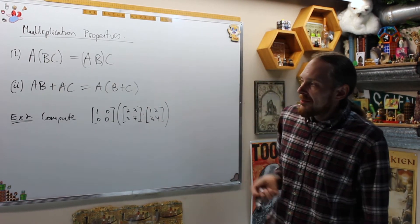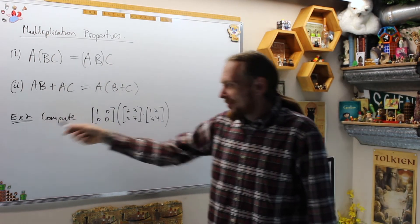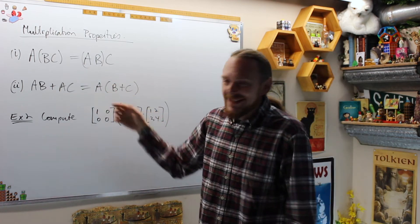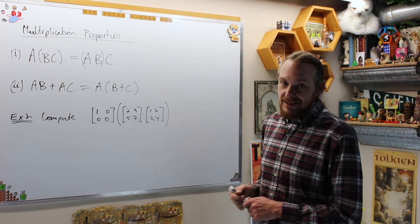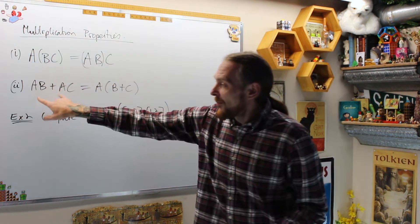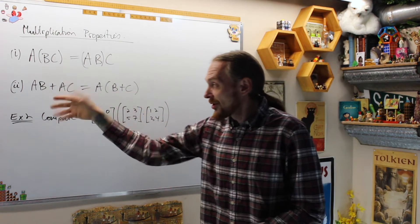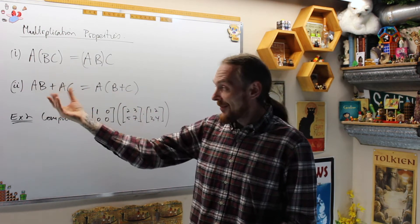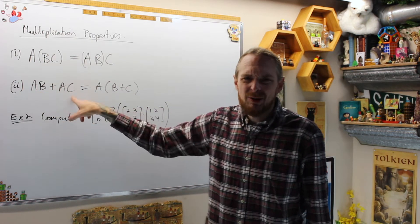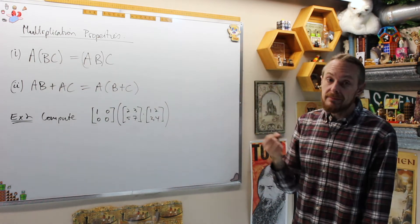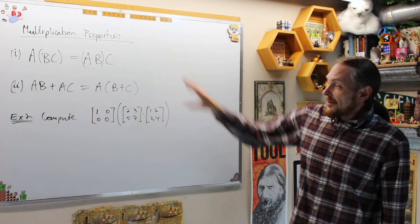Next up, we're going to do two multiplication properties: associativity and distributivity. We should actually call it the factoring property. What we want to see is not just that you can distribute onto both, but we want to see it in reverse. Usually in a problem you're given things mixed up, and you want to pull everything apart. If you can see a matrix A in both terms, you can factor that out in clever ways and separate things.